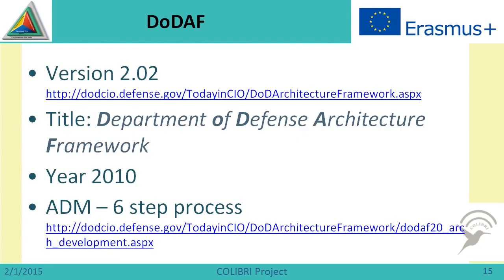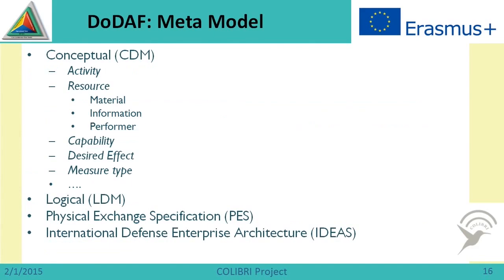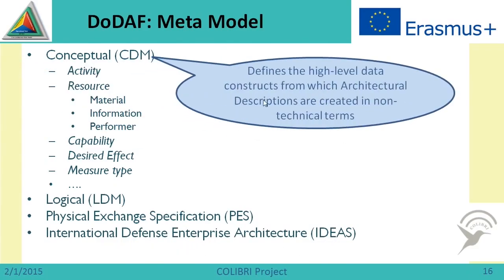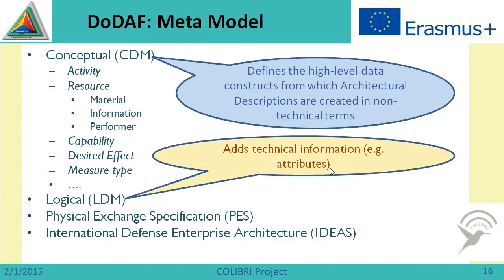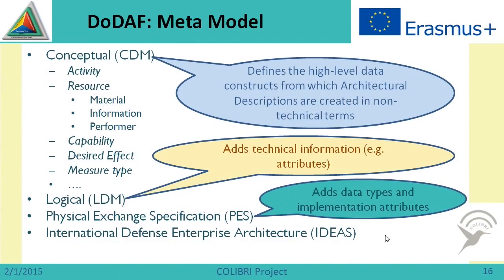The next framework is DODAF — the Department of Defense Architecture Framework — with its latest release in 2010 and a six-step process as its architecture development method. It uses activity, resources, capability, desired effect, and measure type as basic constituents at the upper level. It also has a logical level, physical specifications, and the International Defense Enterprise Architecture called IDEAS. High-level data constructs are at the conceptual level, technical information and attributes at the logical level, and data types and implementation attributes at the physical exchange specification level.